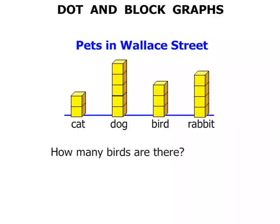Now the first question: how many birds are there? Well, quite simple — we look at bird and we count the blocks: one, two, three. So three is our answer.